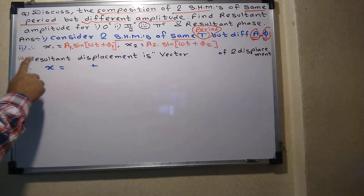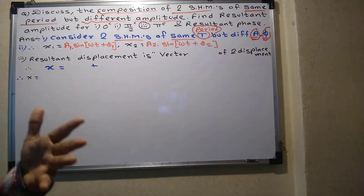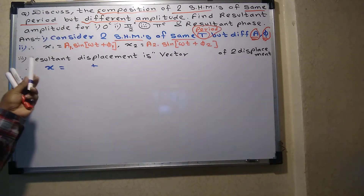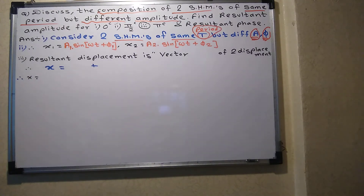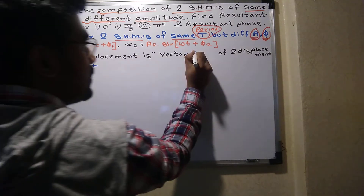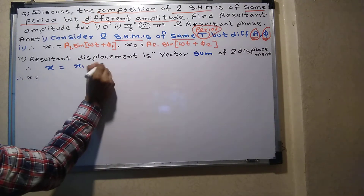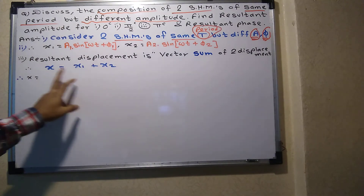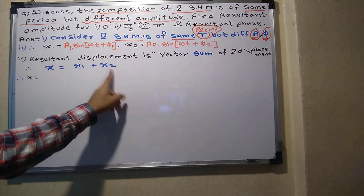Now, what will be the resultant? The resultant displacement, as I told you, is the superposition of waves — the vector sum of two displacements. So the resultant displacement X = X1 + X2. Now I am going to substitute and apply the trigonometric formula.